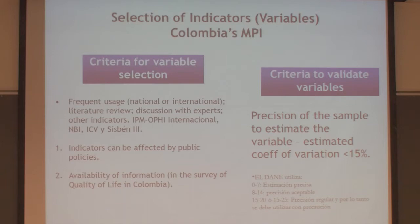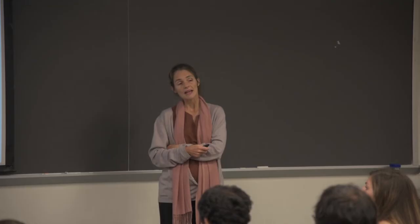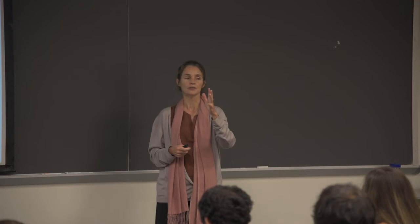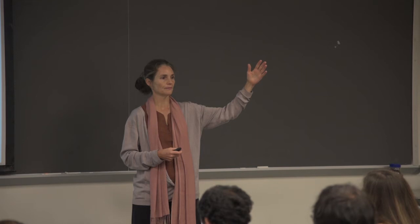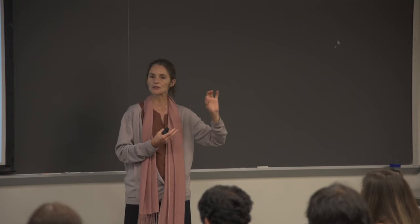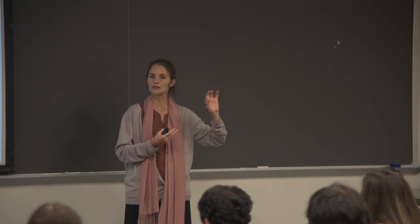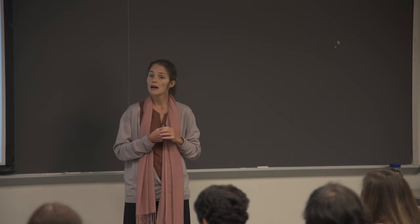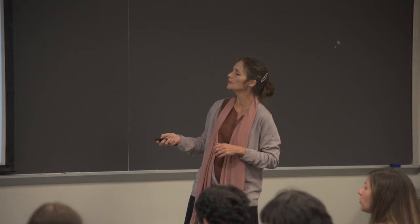The third criterion was that the information had to already be available in their survey. They limited their national measure to data in an existing survey, partly because they had an interruption in the income series and wanted to show multidimensional poverty across time spanning the gap. There's also a sense of confidence: if you can see previous trends, you're less scared of what might happen when you update. Mexico and other countries have launched new surveys; both approaches are possible.